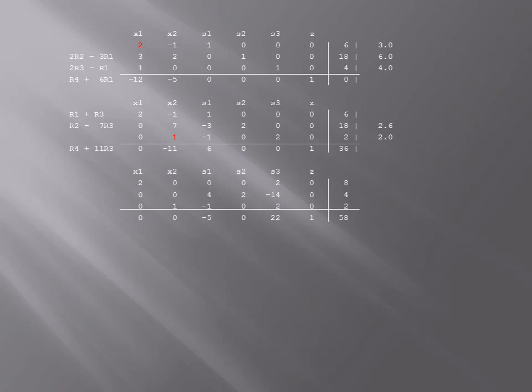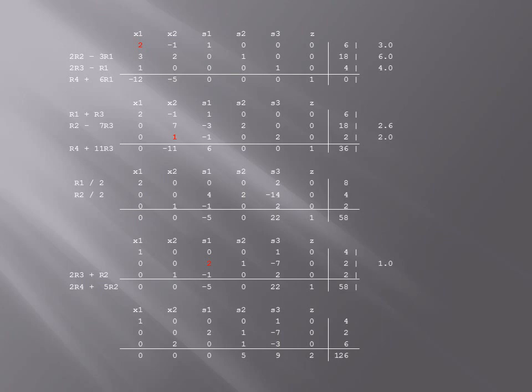The x2 column is now the pivot column, and because we get only two positive ratios, the smaller being 2, the third row is the pivot row. Before continuing, we'll divide rows 1 and 2 by 2. The s1 column is now the pivot column. There's only one positive ratio, so we pivot on the number 2 in the second row, third column. Since there are no negative numbers in the x1, x2, s1, s2, and s3 columns from the bottom row, we have reached the final matrix.